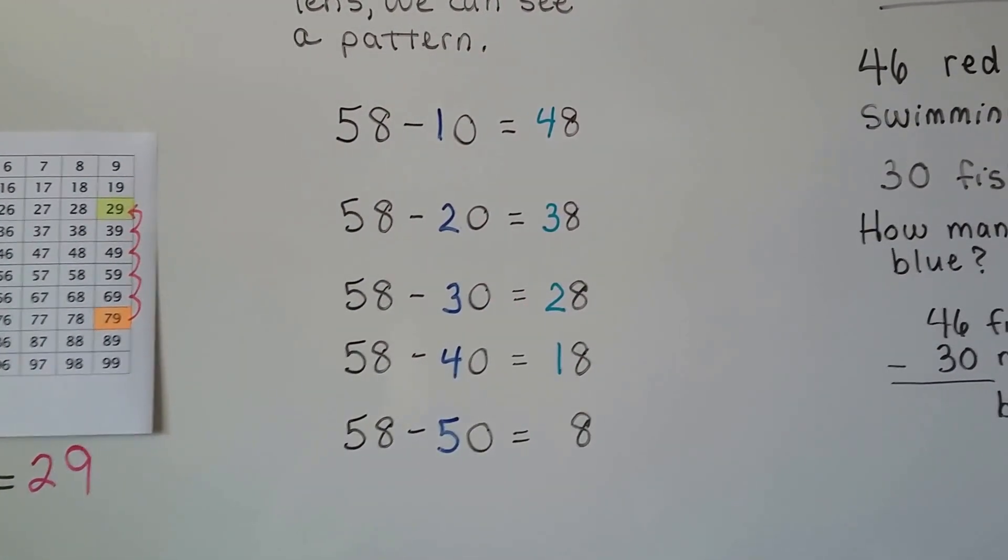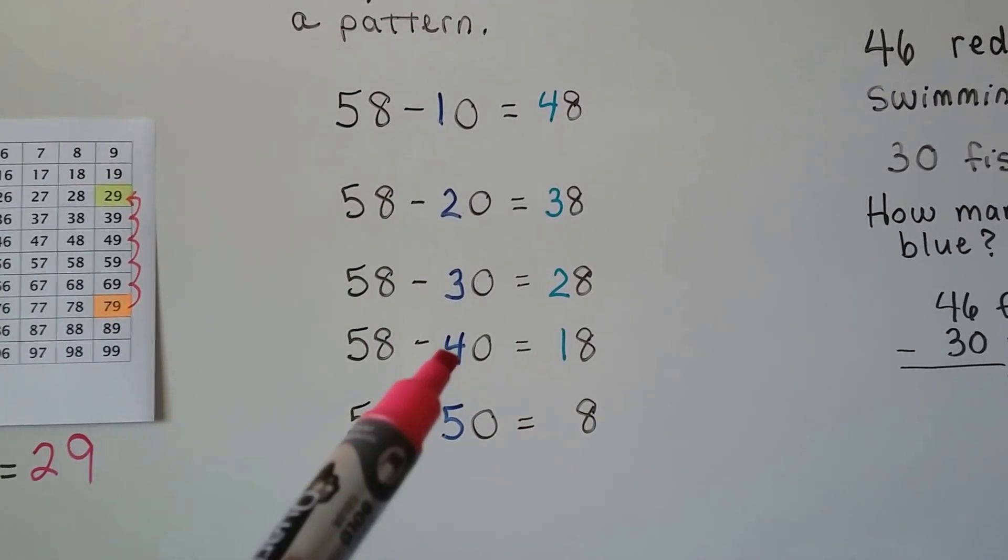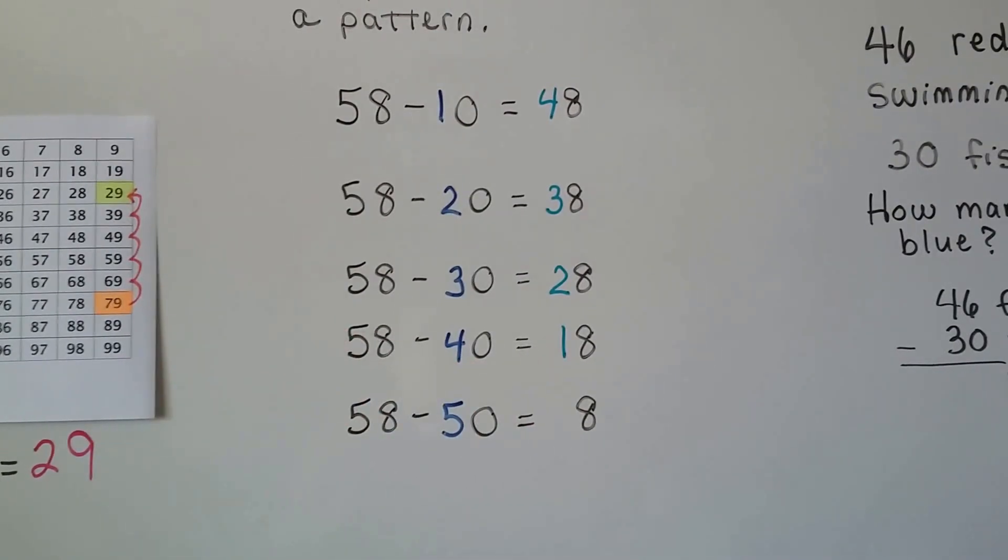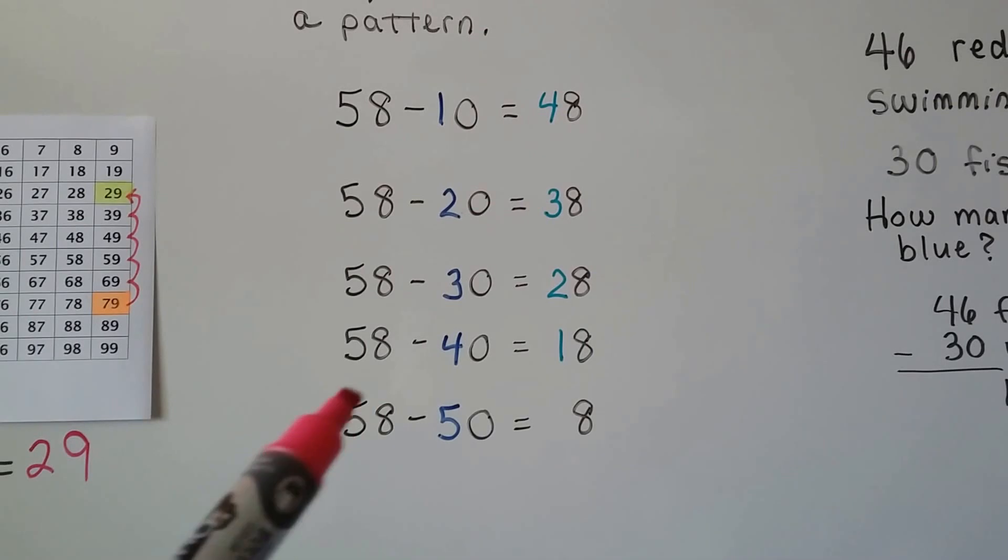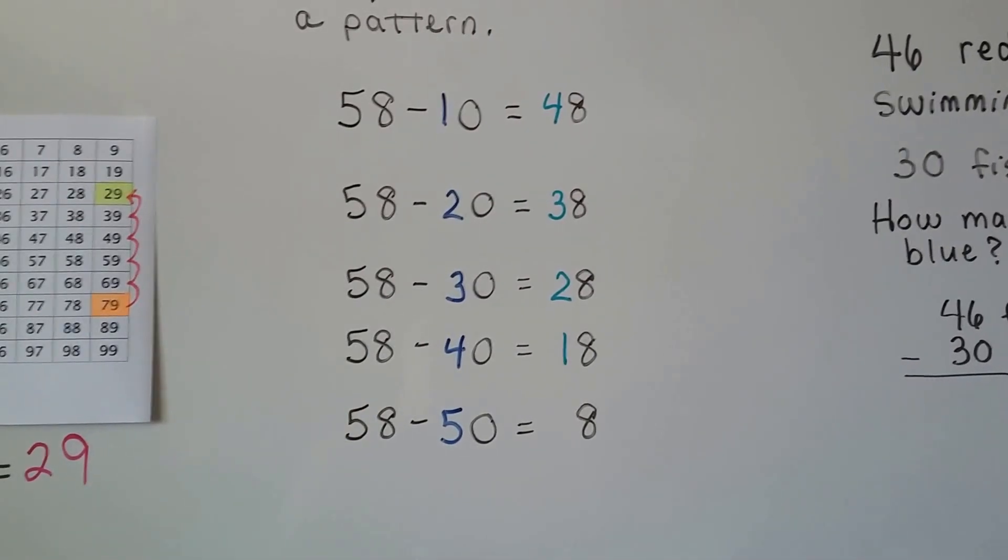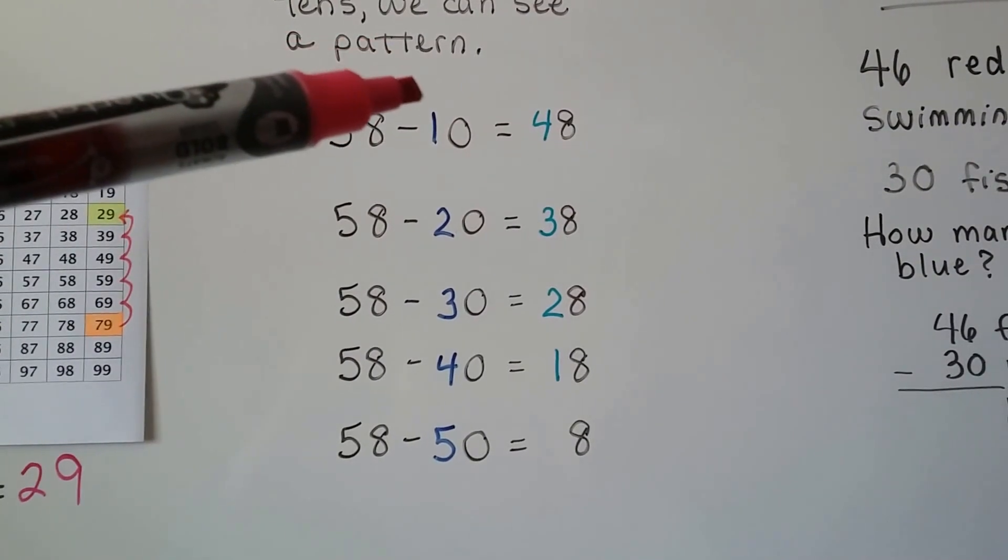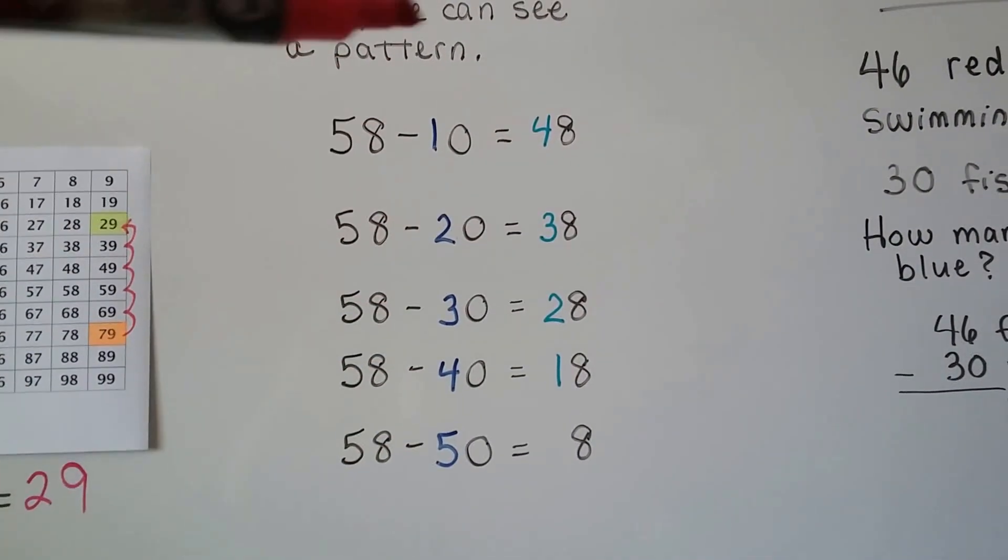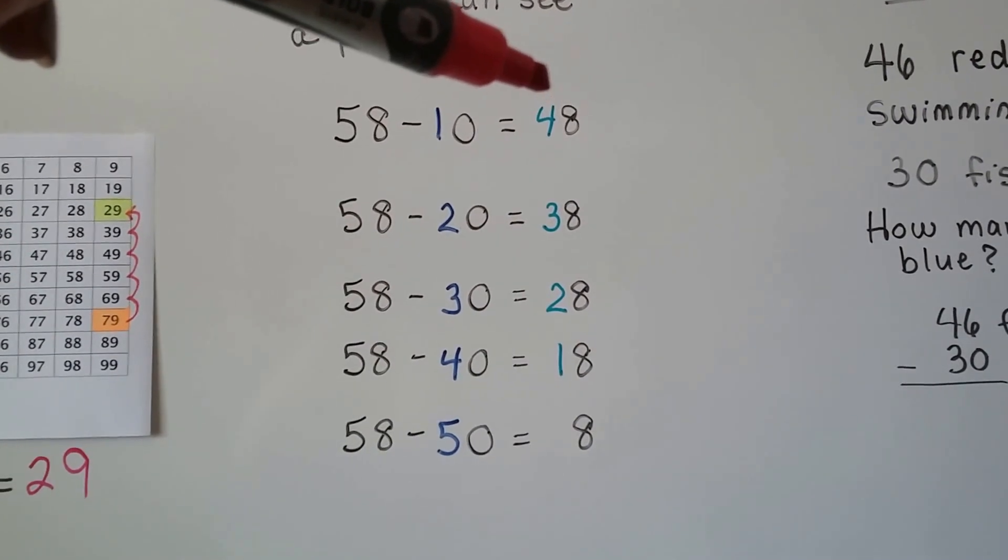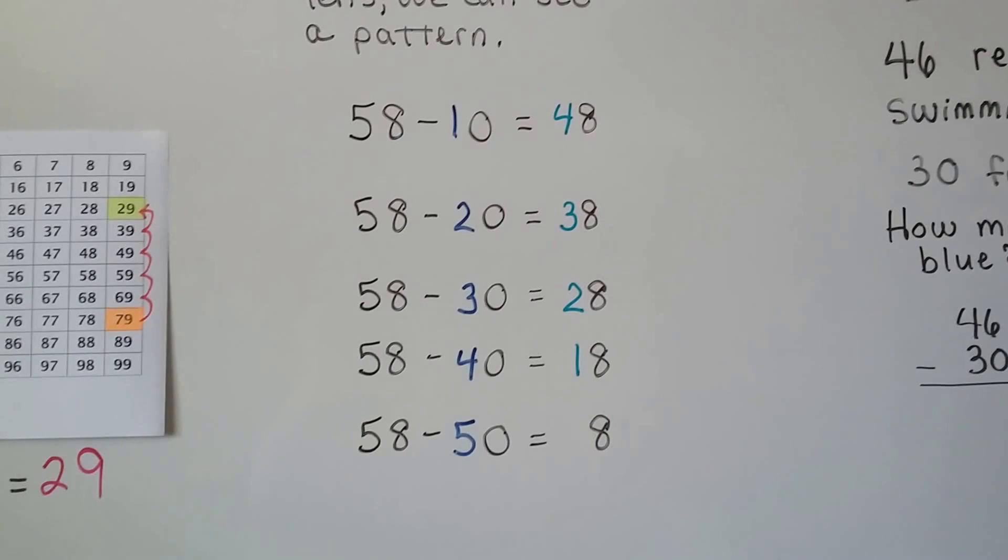See that? It's a 2. When we subtract four tens, it's gonna go down to a 1, and 4 plus 1 is 5. When we subtract five tens, well, we took all the tens away, so now we're just left with the eight ones. And do you see what the tens are doing as we subtract 1, 2, 3, 4, 5 tens? The difference, the answer, gives us 4, 3, 2, 1, and then none.